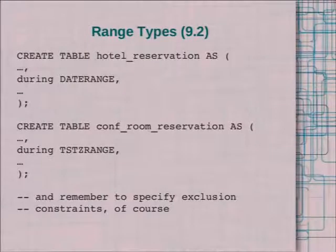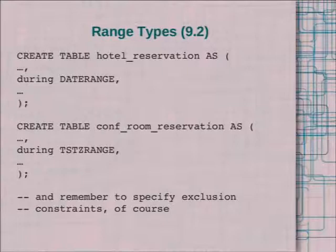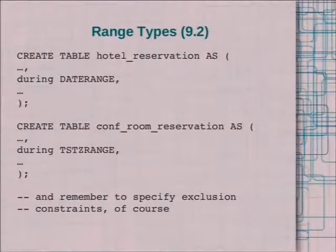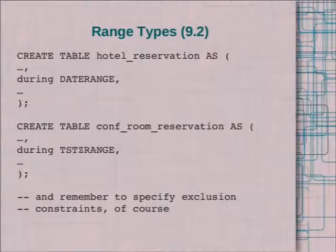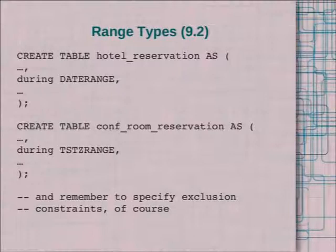A simple example: a hotel reservation might be by day — check-in, check-out — using a date range. A conference room reservation might be for a very specific beginning time like May 17th at 2:30 PM, so you'd want a timestamp with time zone range. Logically they're very similar — you don't have to manage two different data types and worry about having all the operators for both. You get them both here and can manage them in the same way, just at different granularity. For these reservations you'd of course want exclusion constraints as well.